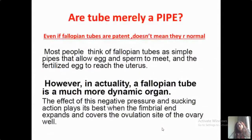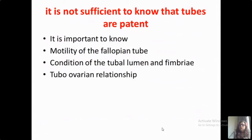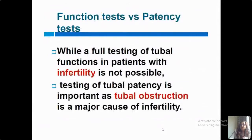Are tubes merely a pipe? This is a question we all need to know. Even if fallopian tubes are patent, it doesn't mean that they are normal. Most people think of fallopian tubes as simple tubes that allow eggs and sperm to meet and a fertilized egg to reach the uterus. However, in actuality, a fallopian tube is much more — a dynamic organ. The effect of negative pressure and sucking action plays its best when the fimbrial end expands and covers the ovulation site of the ovary. So it is not only sufficient to know the tubes are patent; we also need to know about the mobility of the fallopian tubes, the condition of the tubal lumen and the fimbria, and the tubo-ovarian relationship. A functional test versus patency test: while full testing of tubal function in patients with infertility is not possible, testing of tubal patency is important as tubal obstruction is a major cause of infertility.